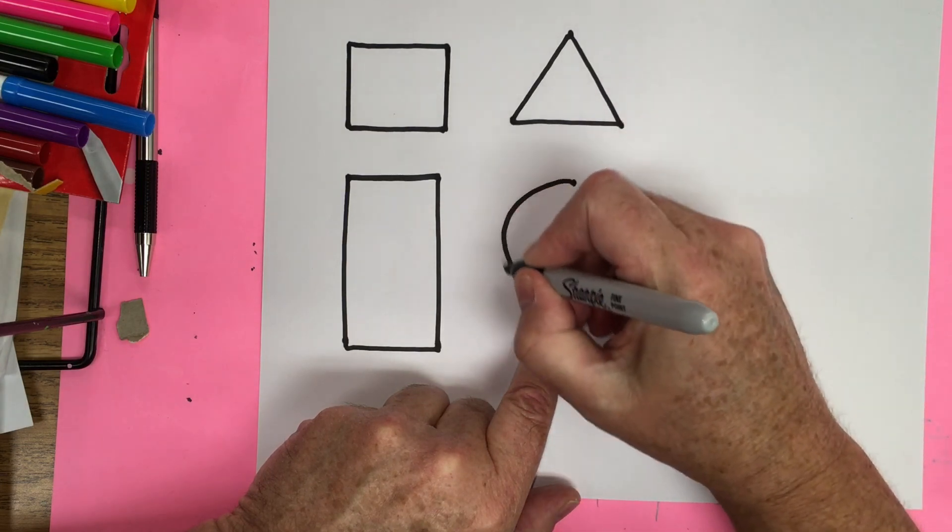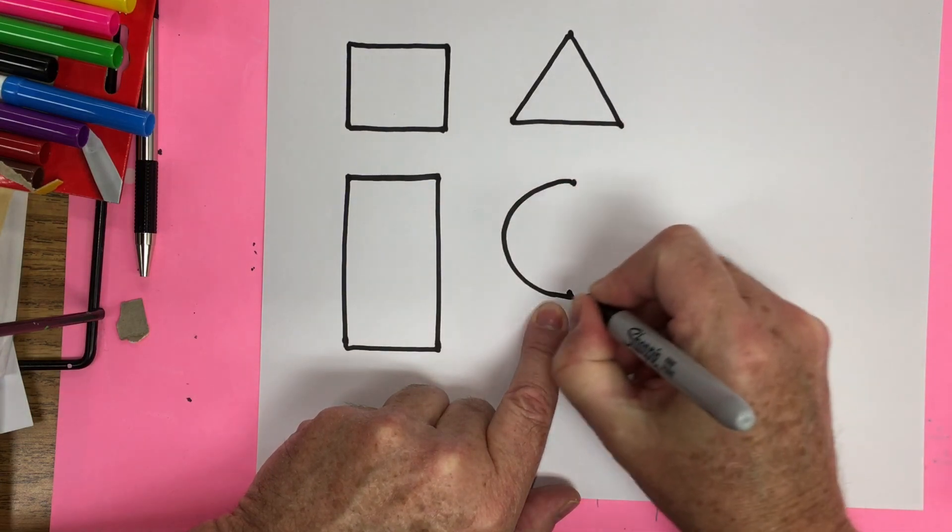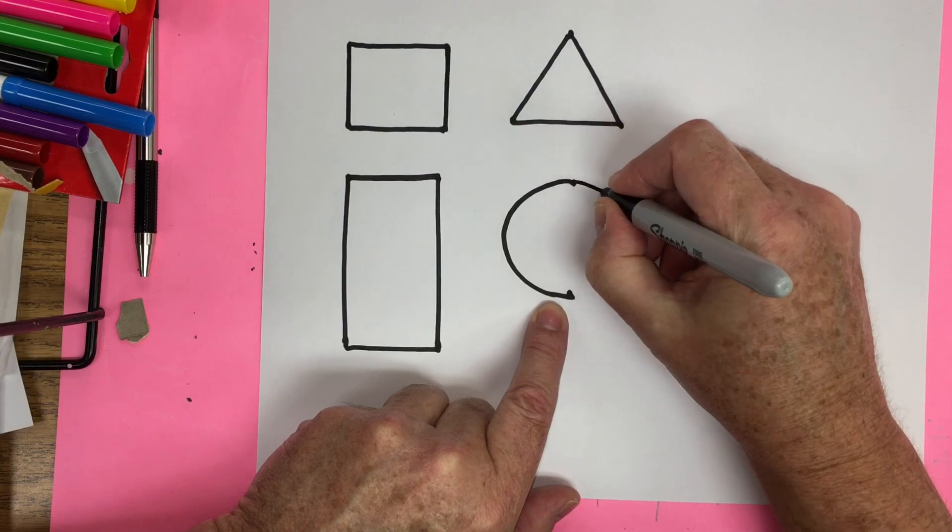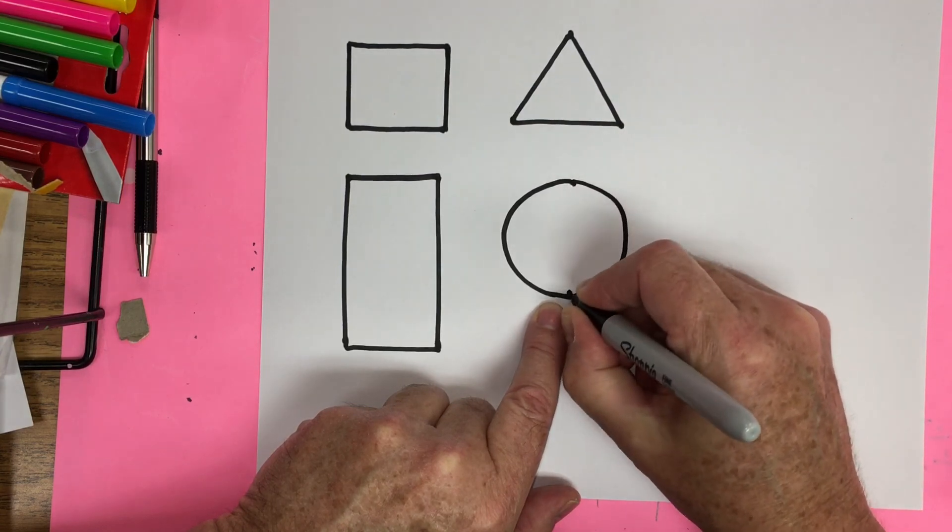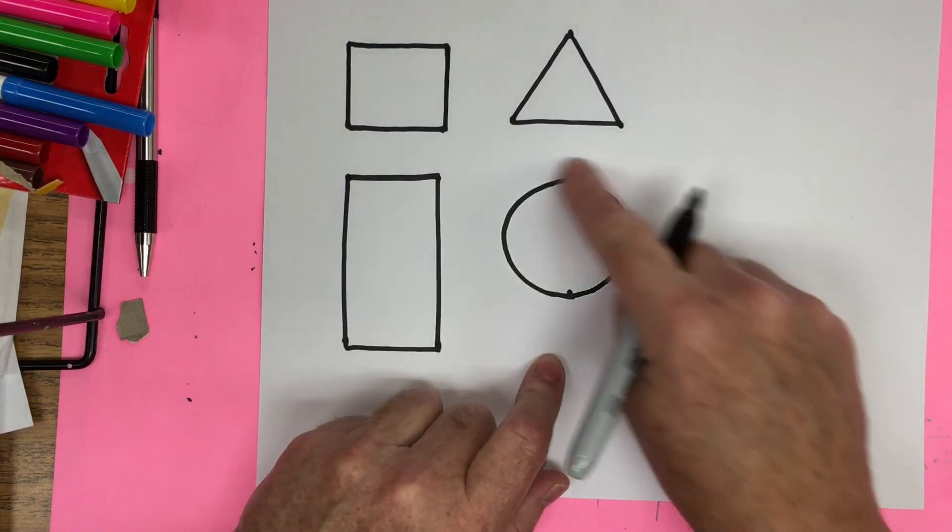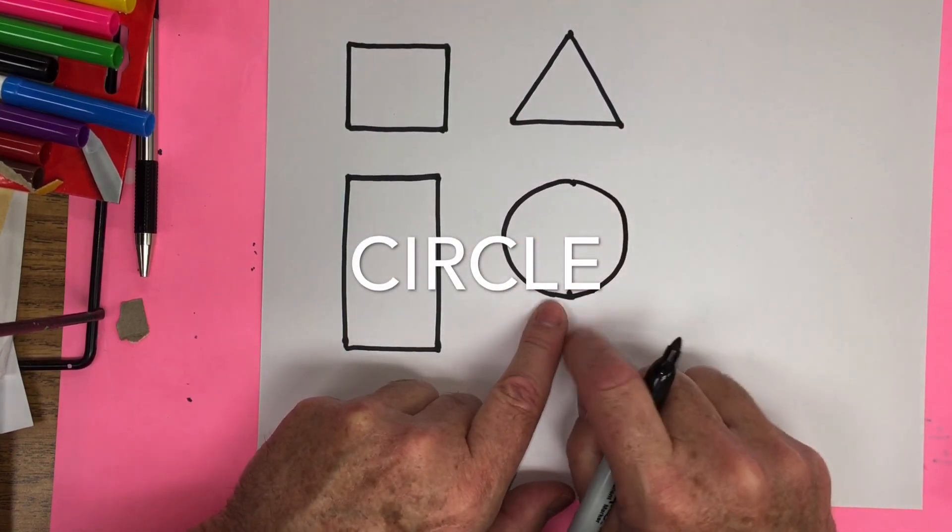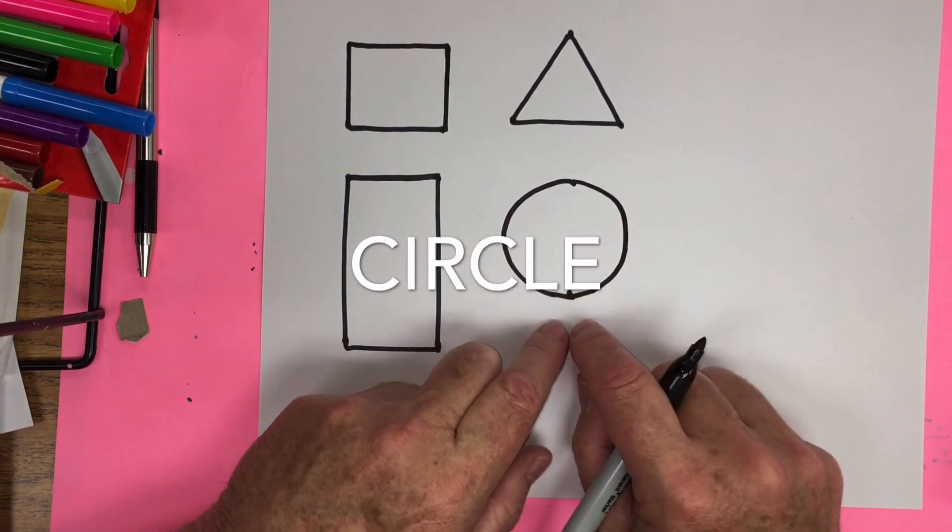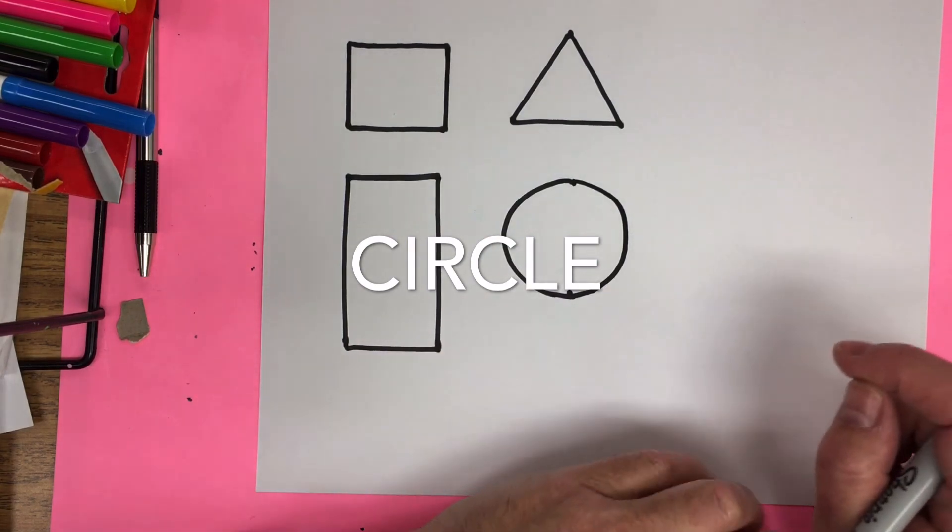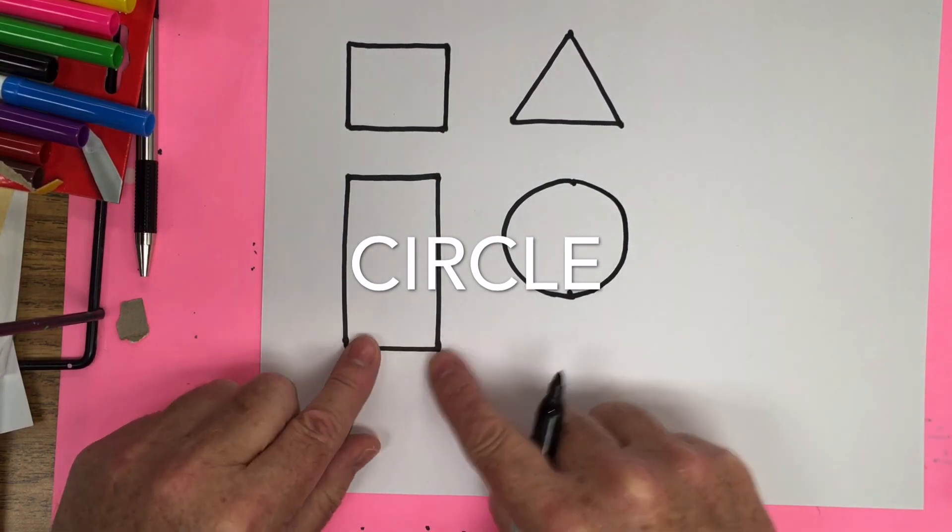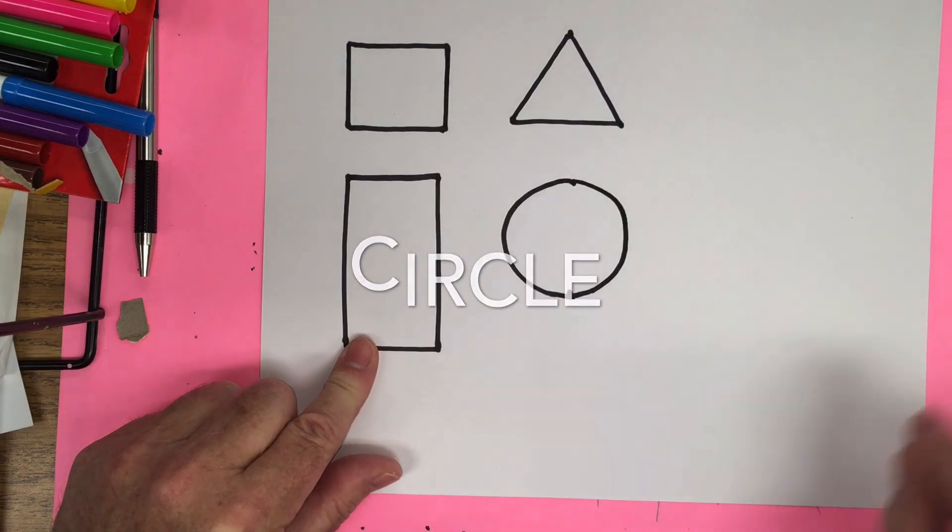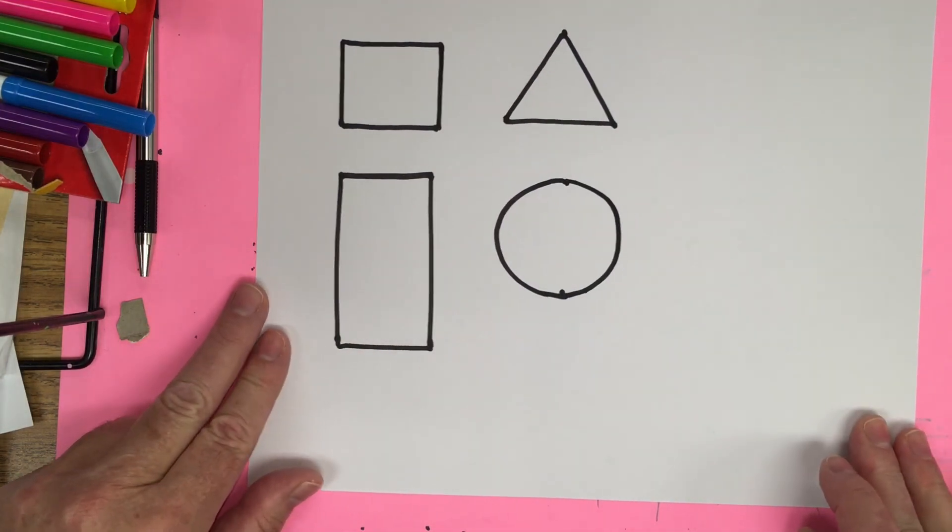We're going to do the same thing, but instead of coming this way, we're going to go the opposite way. Out, around, and right back to the dot. It's okay if your circle's a little lumpy or bumpy. That's fine. It doesn't have to be a perfect shape. Remember, this is practice and we'll be practicing these shapes again after we finish the video.